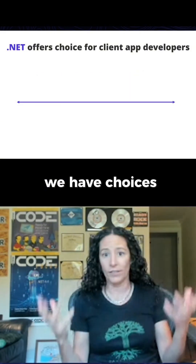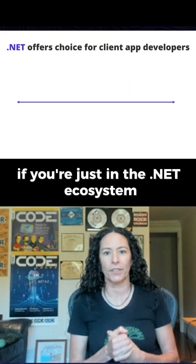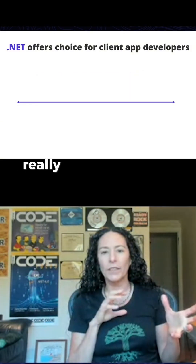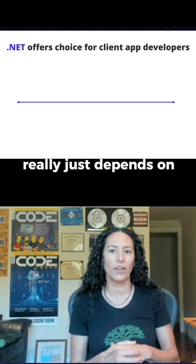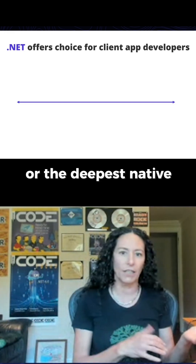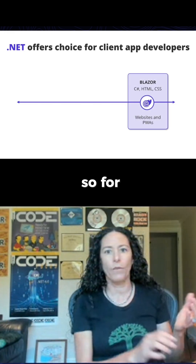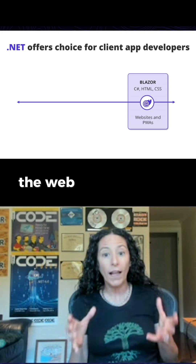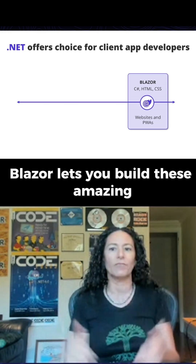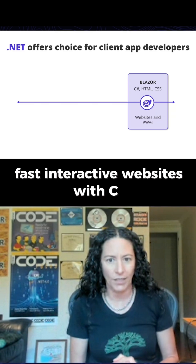We have choices if you're just in the .NET ecosystem. The route you take really just depends on whether you want the most reach or the deepest native experiences. For the web, we have Blazor. Blazor lets you build these amazing, fast, interactive websites with C Sharp.